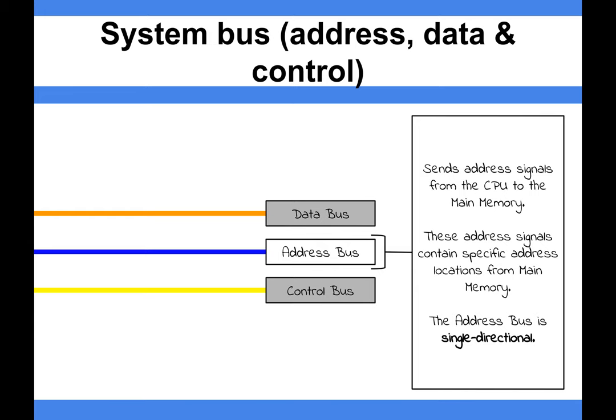The address bus is single directional and sends address signals from the CPU to memory. These address signals contain specific addresses, so when it wants an instruction, it will send the address of that instruction or data to memory. It only goes one way, from the CPU out.